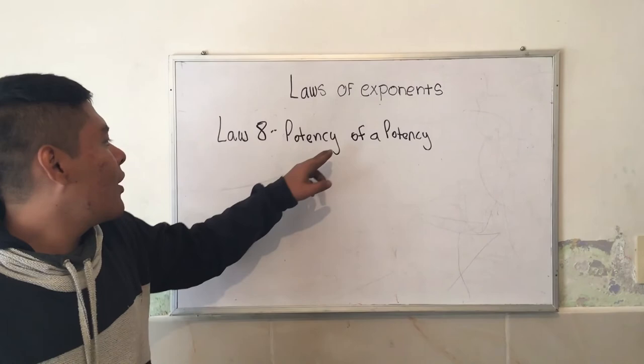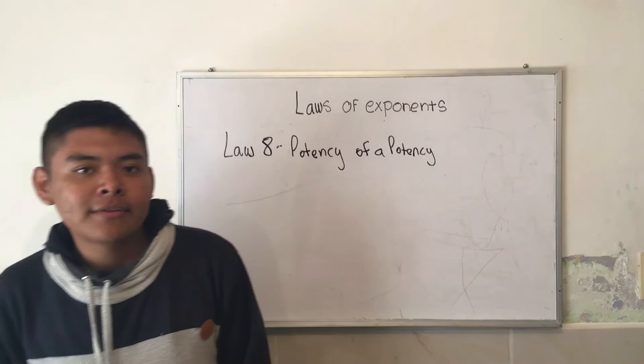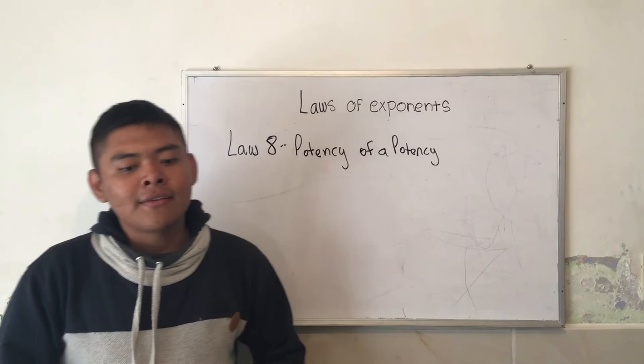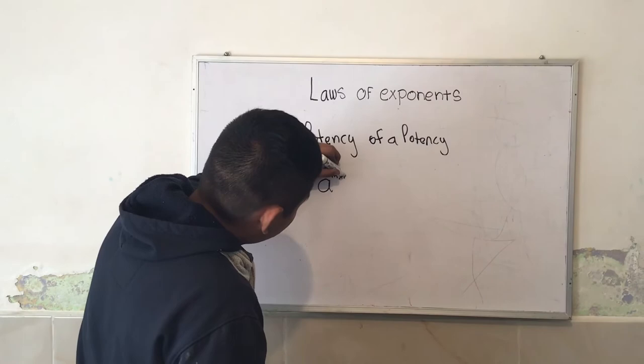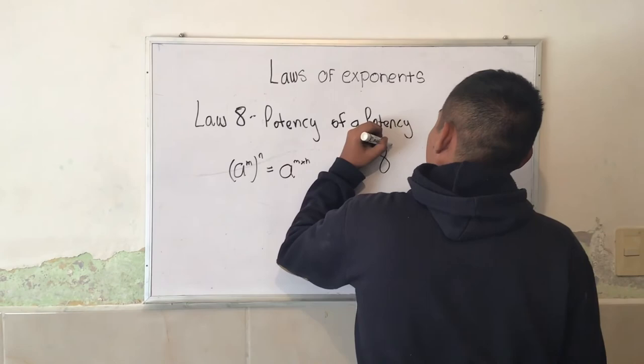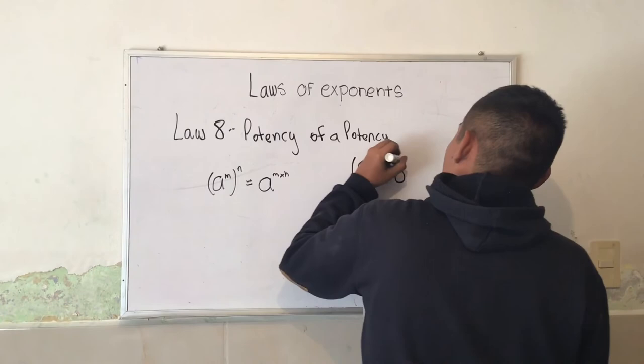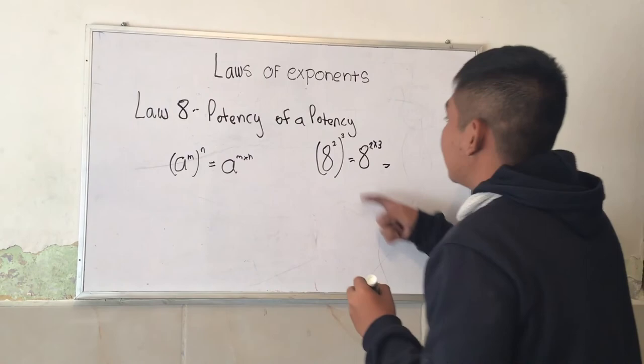Eighth law: potency of a potency. When you have a potency that is elevated to another potency — two exponents at the same time — the base is maintained and the exponents are multiplied. That is, A to the M to the N is equal to A to the M times N. For example, A to the 2 to the 3 is equal to A to the 2 times 3, which is equal to A to the 6.